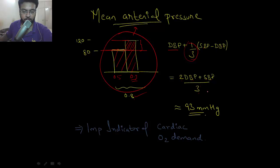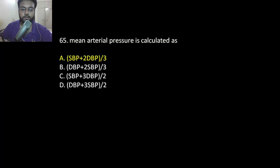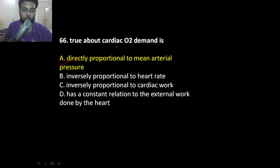And it's approximately 93 mmHg, and this is the important indicator of cardiac oxygen demand. So this is the mean arterial pressure, and cardiac oxygen demand is directly proportional to mean arterial pressure.